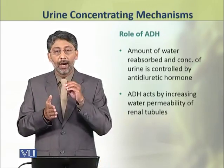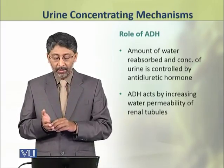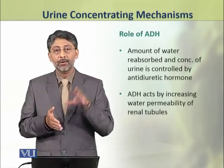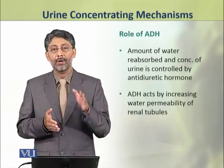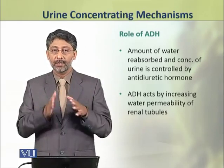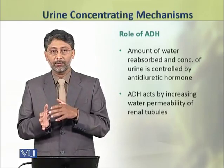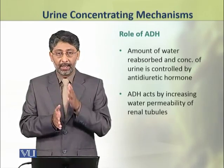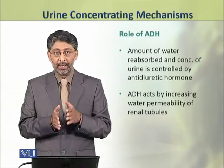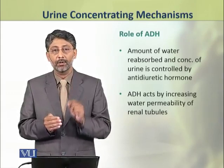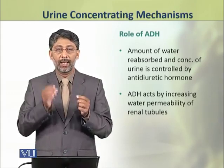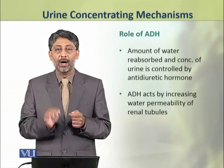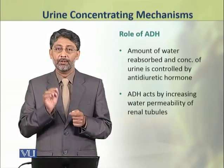The amount of water reabsorbed and the concentration of urine is controlled by anti-diuretic hormone. It controls how much water and how many solutes are to be removed or absorbed, because it increases the water permeability of the renal tubules.